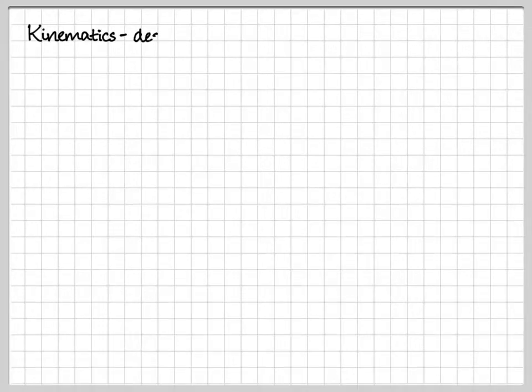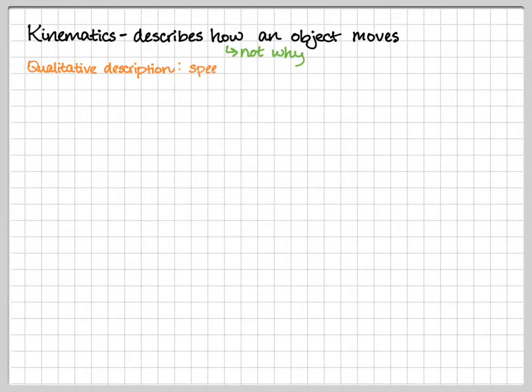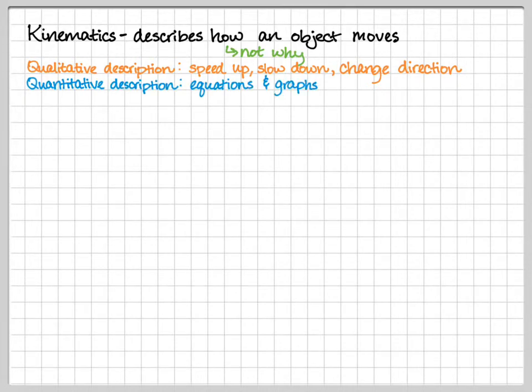Today I'm going to give a brief overview of kinematics, the definitions of distance, displacement, speed, velocity, acceleration, and the four equations of constant acceleration. So starting off, kinematics itself specializes in describing how an object moves. We're not focused on the why yet.